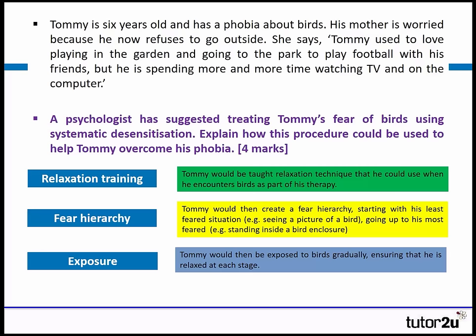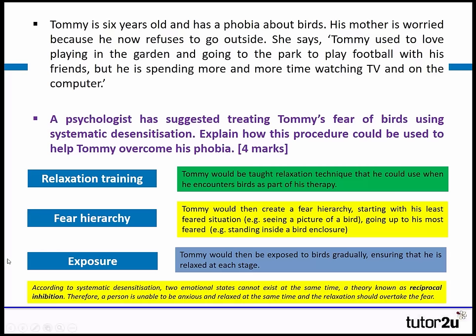If that question was worth six marks, this wouldn't be enough. There's a key term called reciprocal inhibition — the idea that we can't experience two different emotional states at exactly the same time. A person can't be relaxed and scared simultaneously. So if we teach someone relaxation training, that relaxation should overtake their fear. If this was a six-marker, I would include that systematic desensitisation works on the idea of reciprocal inhibition, and eventually the relaxation will overcome the fear and the anxiety.